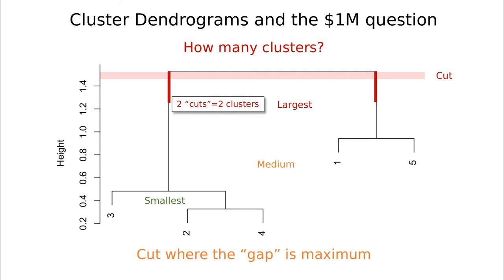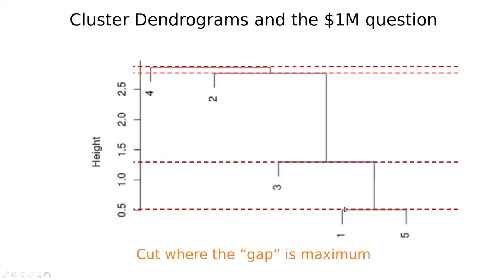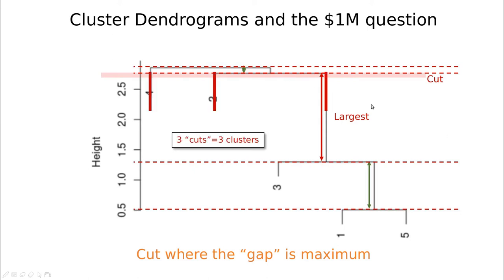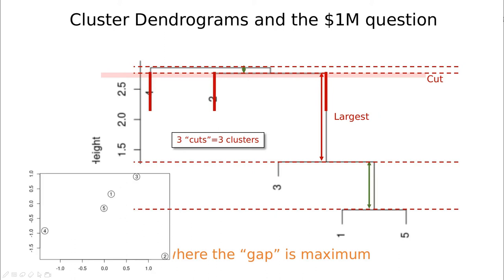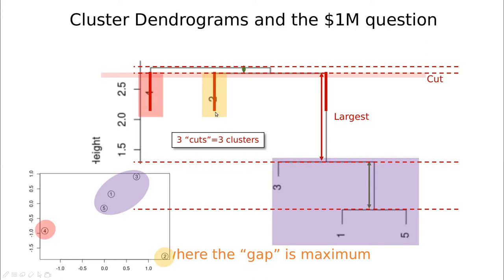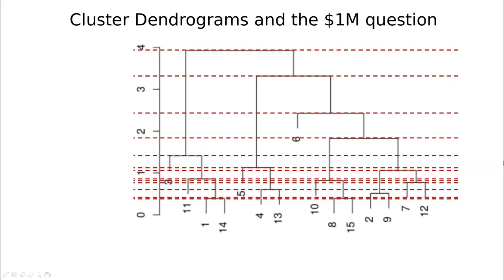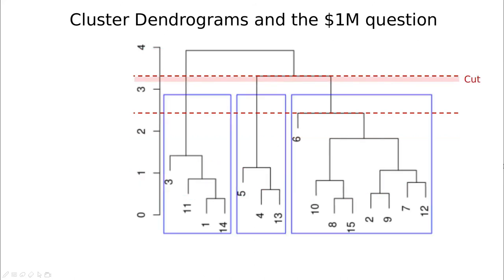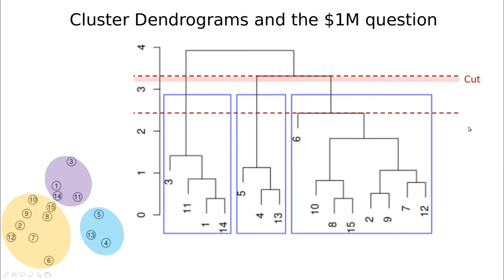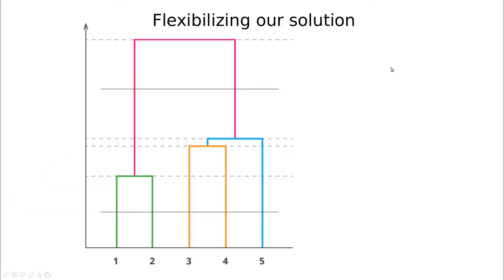The benefit of hierarchical trees over k-means is that we cut where the gap is maximum, giving a quantitative criterion to decide the best partition. In another example, we compute the distances between different branches of the tree, find the largest one in the middle, make that cut, and we have three cuts — three clusters, easy. The data clearly shows three corresponding groups.